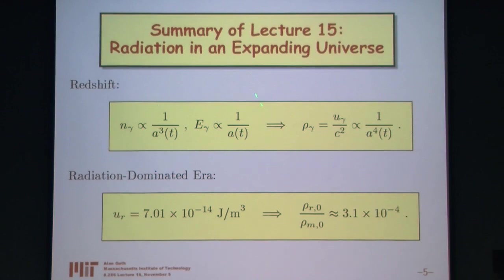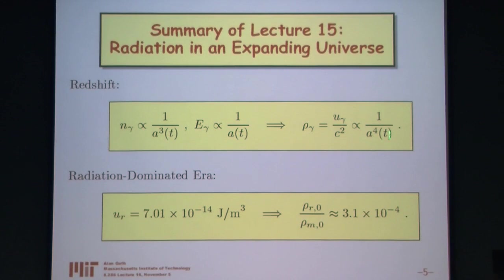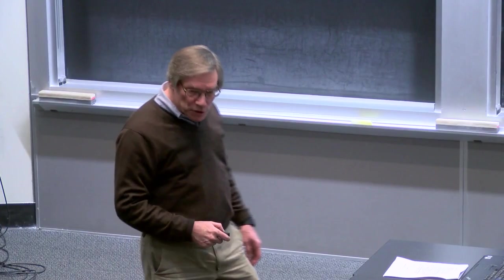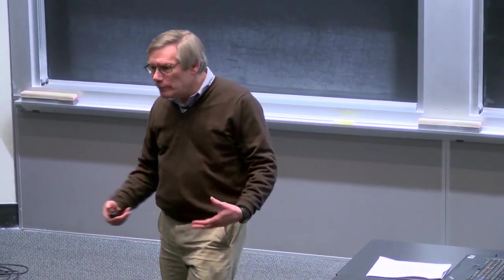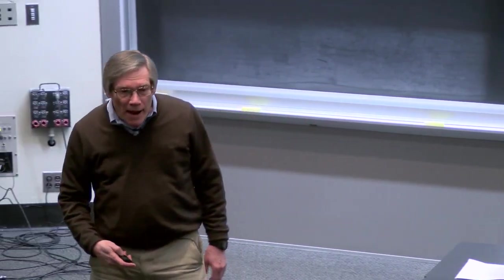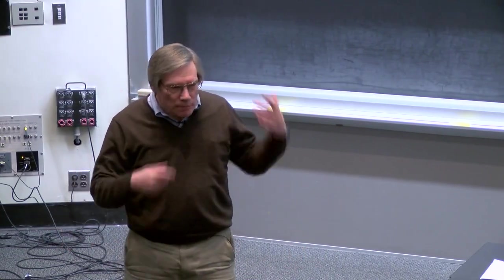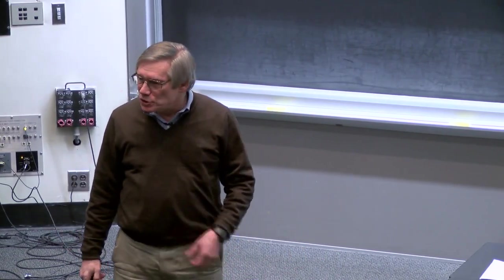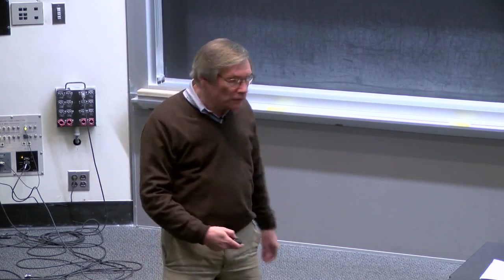Getting back to the early universe: if the energy of each photon falls off like 1 over the scale factor, and the number density falls off like 1 over the scale factor cubed, then the energy density — and hence the mass density — of radiation falls off like 1 over a to the fourth. This contrasts with the 1 over a cubed we found for non-relativistic matter. That difference will play a key role in how the universe evolved.